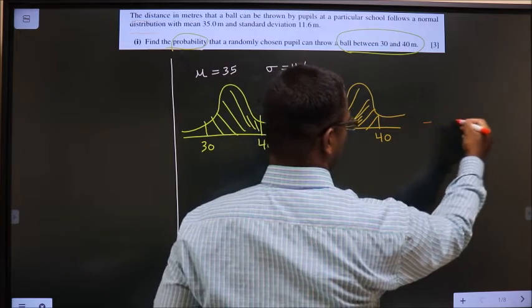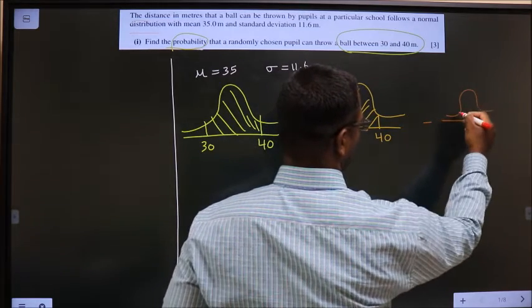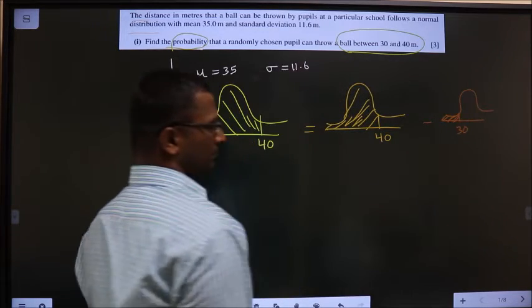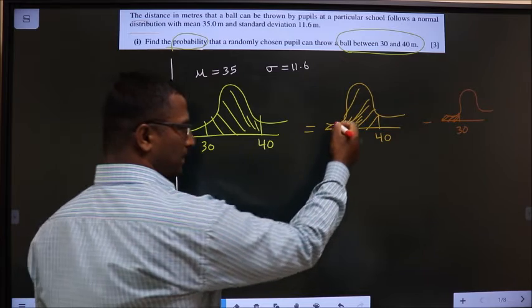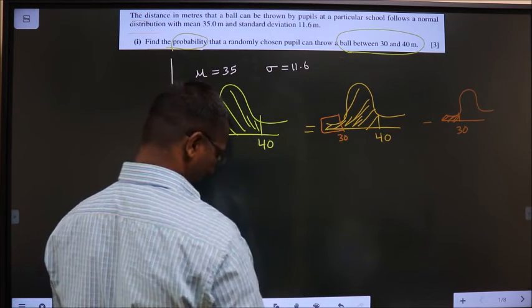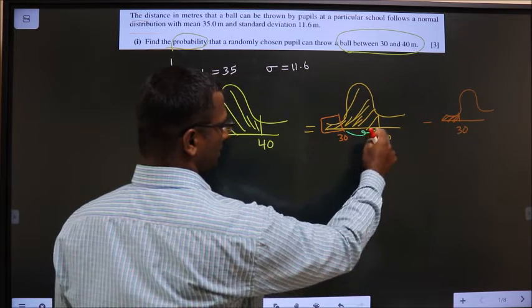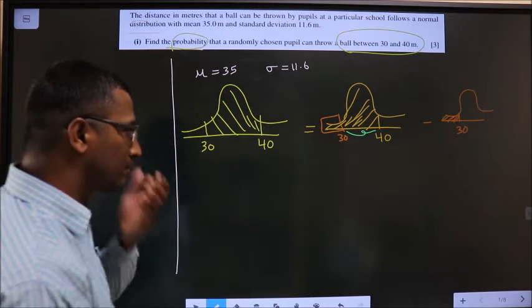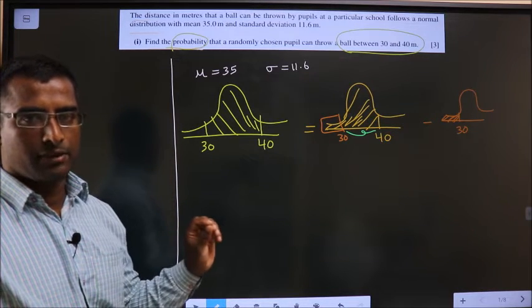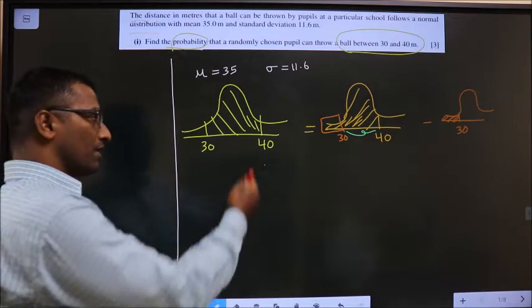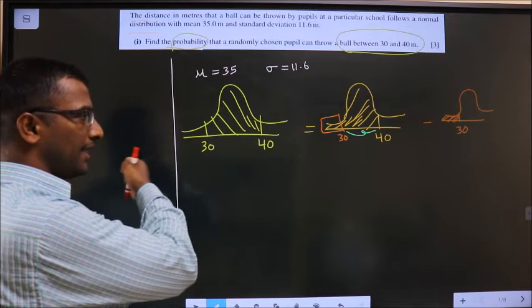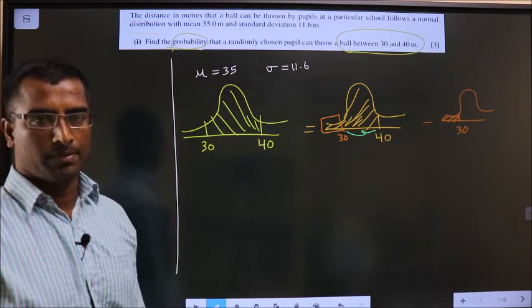From that, I will remove area which is less than 30, this area I will remove. From this entire thing, if I remove this thing, the result will be this particular area. Am I clear? All the normal between sums we do in the same way. First, this entire probability from that remove this area. We get the in between area that is probability.